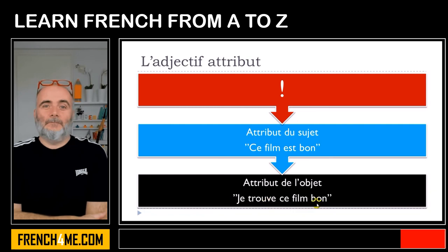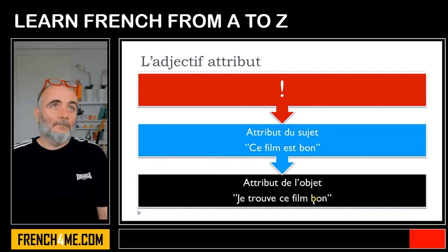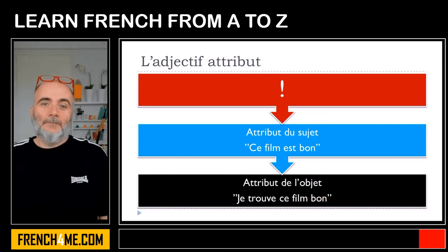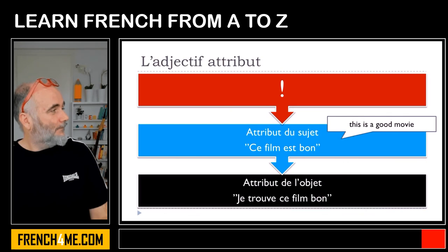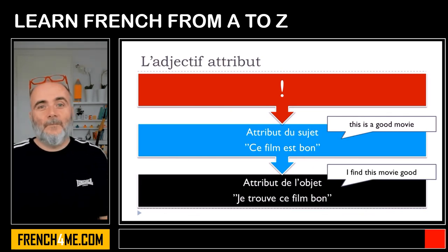But keep in mind that it's also possible to have this attribut as attribut de l'objet. That means you have a sentence with a verb, but the adjective is not connected to the subject — it is connected to the grammatical object. For example: je trouve ce film bon. Here bon is also an adjectif attribut, but it is the attribut de l'objet. Ce film est bon. Je trouve ce film bon.